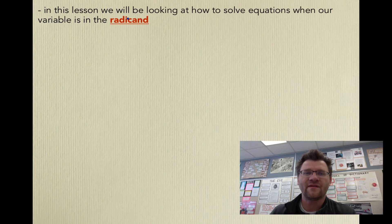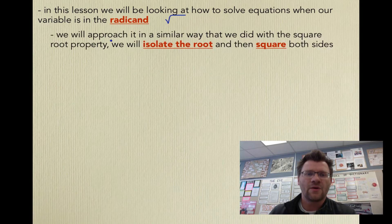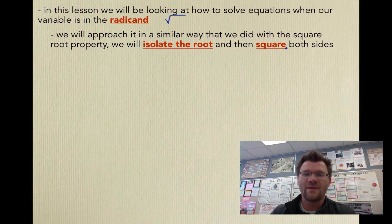In this lesson, we'll be looking at how to solve equations when our variable is in the radicand — that's underneath the root sign. We will approach it in a similar way that we did with the square root property. What we're going to do is isolate the root and then square both sides.